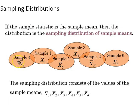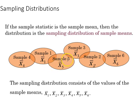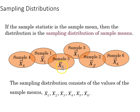If what we're interested in understanding is the mean and we're drawing samples, then the means for each sample form a sampling distribution of sample means. We don't necessarily just want to look at means — we could also look at standard deviations or variances. The sampling distribution consists of the values of the sample means, where x-bar indicates a sample mean, not a population mean, and the subscript indicates which number sample it is.